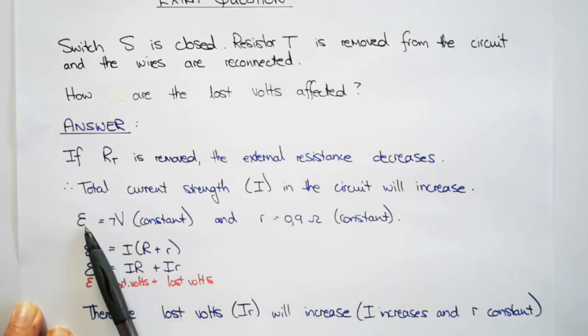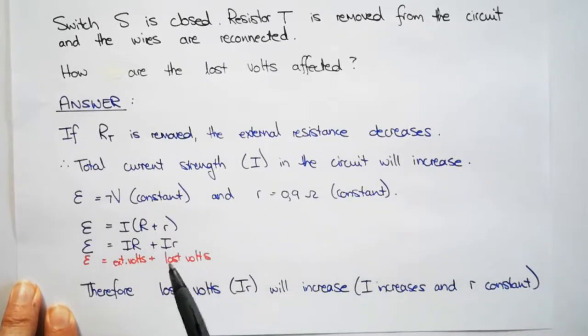You have to say that EMF and little r remain constant. The reason is because they are affected by your battery. Your battery has not changed in this question. All we did was remove resistor T. So you have to say that EMF and little r remain constant. Then we go to this equation which is on your data sheet. Multiply the brackets out so that we can see what each term stands for. I times little r is your lost volts.